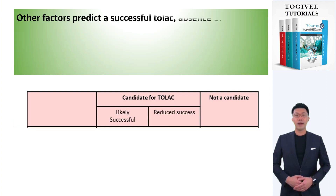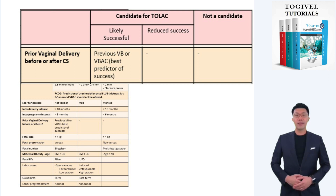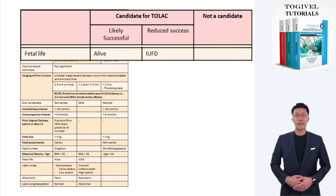Other factors may be used as predictors of a successful TOLAC. Absence of these factors does not place the patient in the category of not a candidate; their absence simply means TOLAC will less likely be successful compared to their presence. The most important of these factors is a previous successful natural birth before or after the CS — in both cases, this is a strong predictor of successful TOLAC, though careful monitoring is still crucial as there is no guarantee of success. Absence of this factor does not necessarily mean an unsuccessful TOLAC. Another factor is an alive fetus, which makes chances of TOLAC success greater compared to a demised fetus.